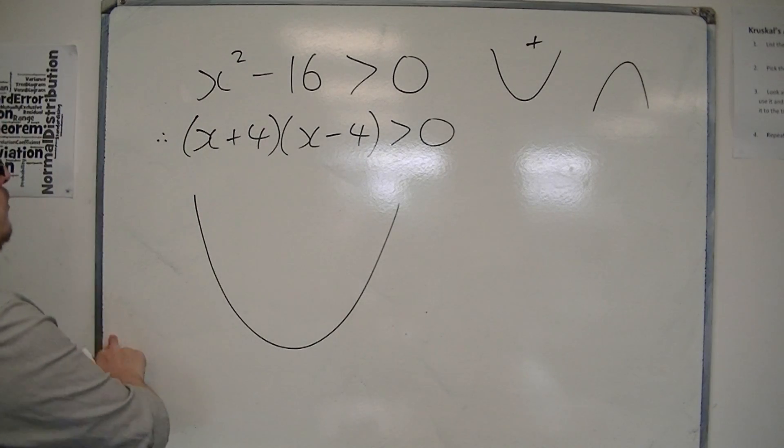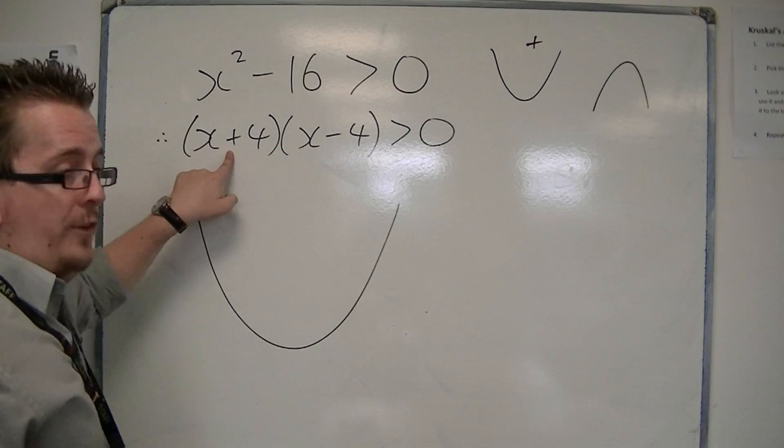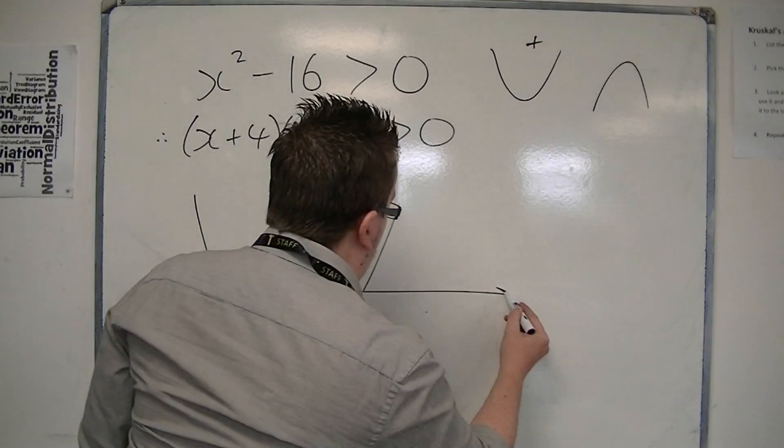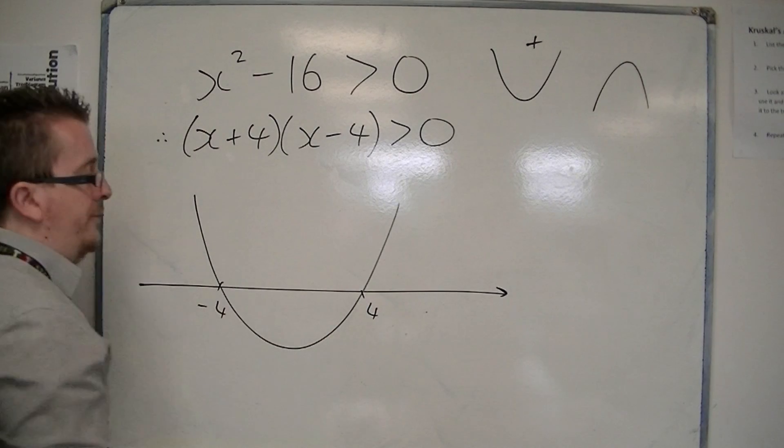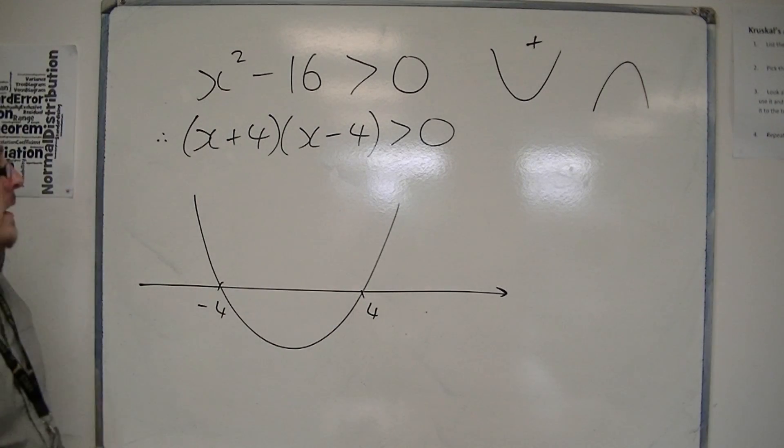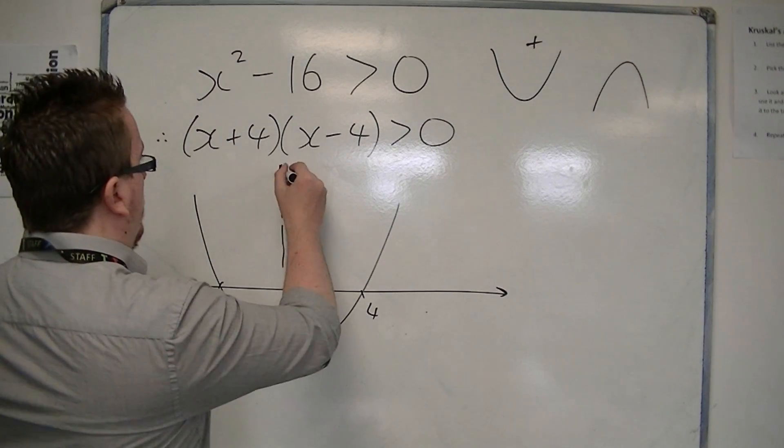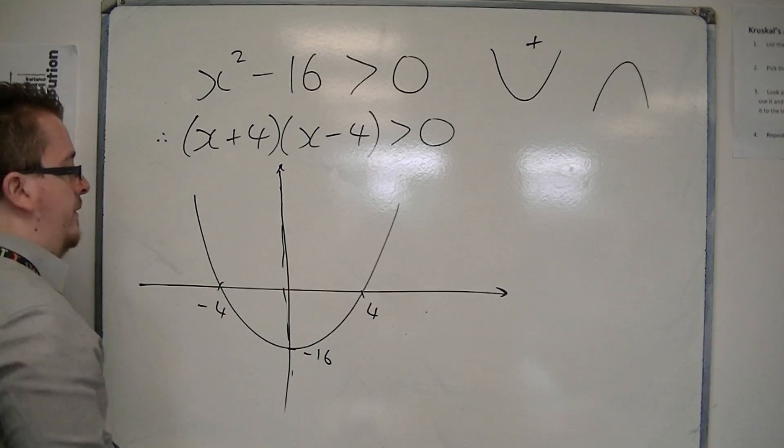You know that the solutions for this quadratic is minus 4 and positive 4. So, there are solutions. One is at minus 4, one is at positive 4. In fact, this quadratic goes through minus 16 on your y-axis.